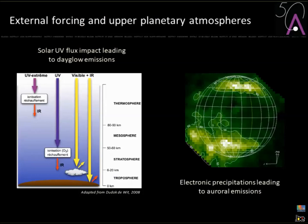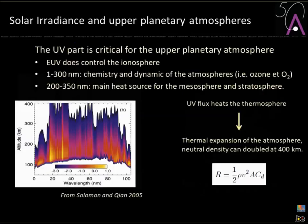The solar UV flux excites the upper planetary part and causes dayglow emissions — atmospheric emissions coming only from solar UV excitation. You also have the counterpart through electron precipitation, which produces the typical aurora emission. A quick summary: the EUV controls the ionosphere; the full UV from 1 to 300 nanometers controls the chemistry and dynamics of the atmosphere, including ozone and molecular oxygen.